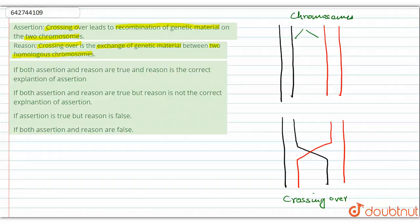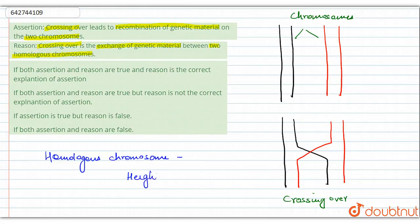The reason states that crossing over is an exchange of genetic material between two homologous chromosomes. This is also correct. Homologous chromosomes means crossing over only occurs between chromosomes that carry the same gene - for example, the gene for height. Crossing over can only take place between chromosomes in which that gene is present.